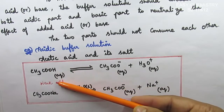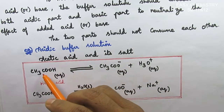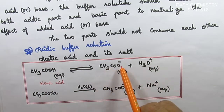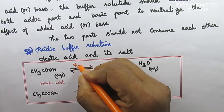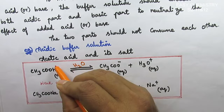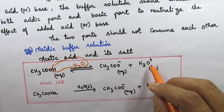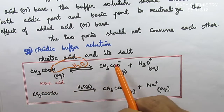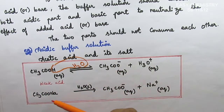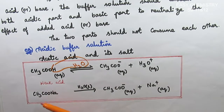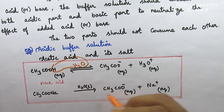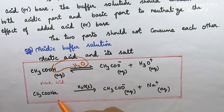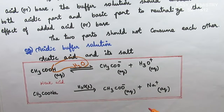Acetic acid is a weak acid, meaning it has incomplete ionization. If you take 100 molecules, only a few ionize to give H3O plus and CH3COO minus. Sodium acetate, on the other hand, is a strong electrolyte. It completely ionizes to give 100 Na plus and 100 acetate ions (CH3COO minus). In the buffer solution, this mixture of weak acid and strong electrolyte salt together maintains the pH.